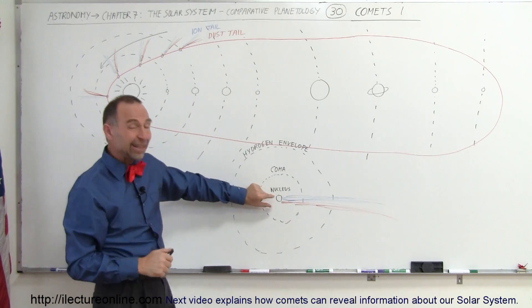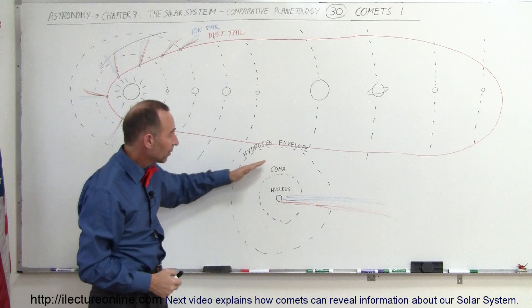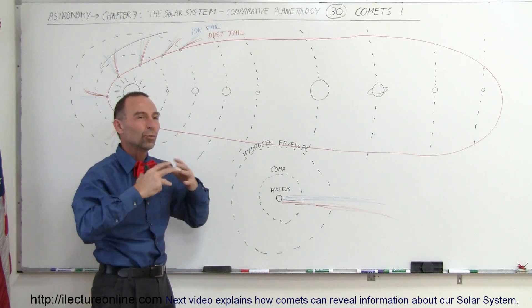Notice if the nucleus is about 10 kilometers across, sometimes they're a little bit smaller, sometimes a little bit bigger. Around the nucleus, we have what we call a coma.